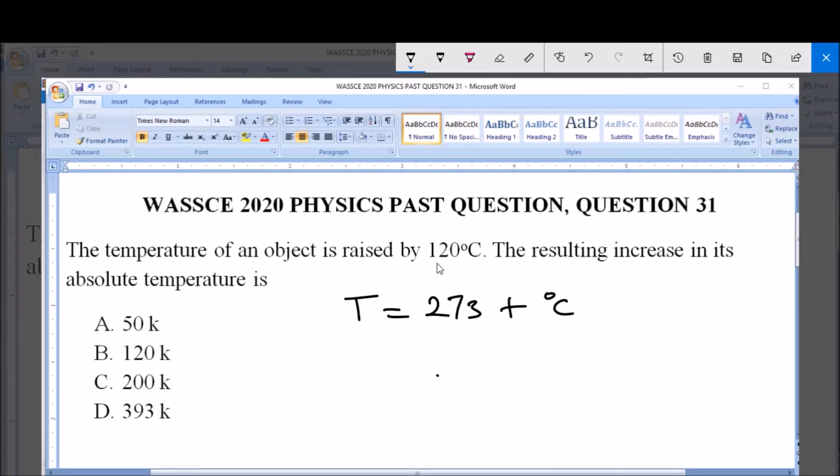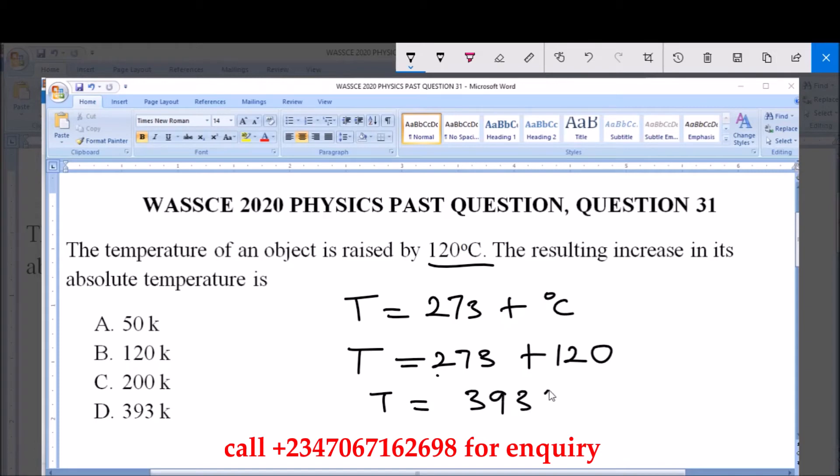We are given a temperature rise of 120 degrees Celsius. Therefore, the absolute temperature T which is given in Kelvin will be equal to 273 plus 120, and the temperature T is equal to 393 Kelvin.